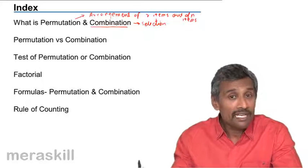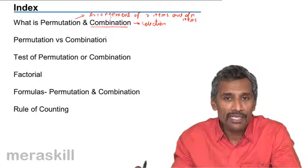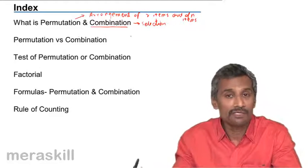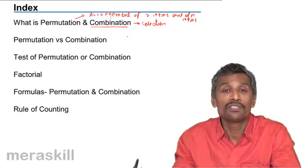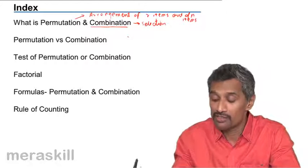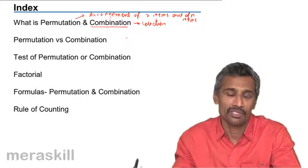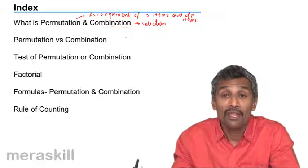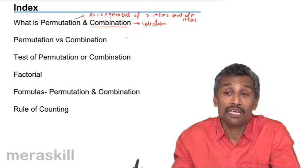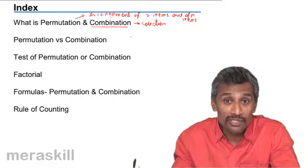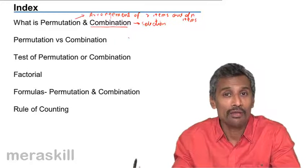I just gave you a hint of the difference between permutation versus combination, but we'll move into the further nuances. What is the difference between permutation and combination? When do we understand and how do we understand when to use the permutation concept and when to use the combination concept?